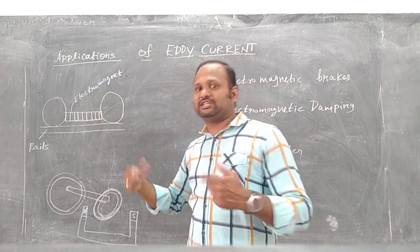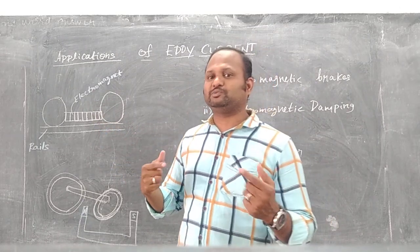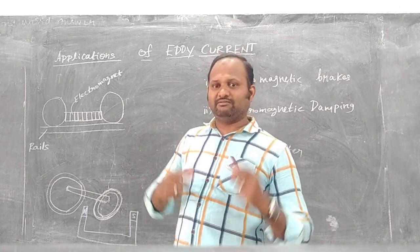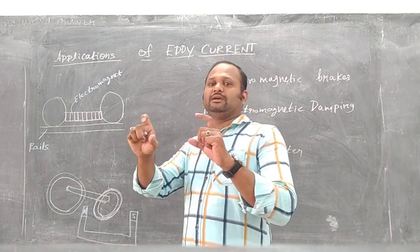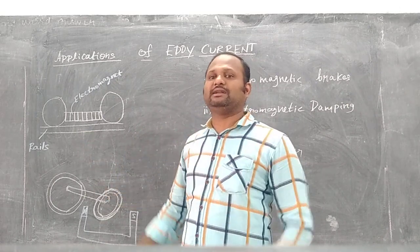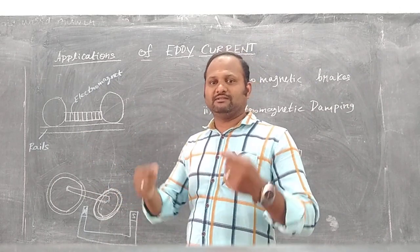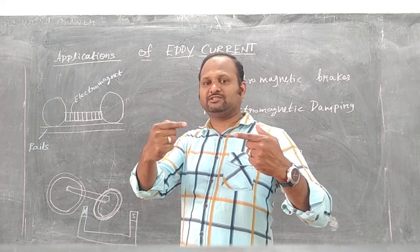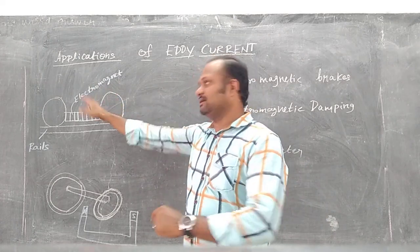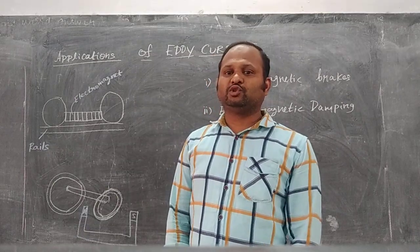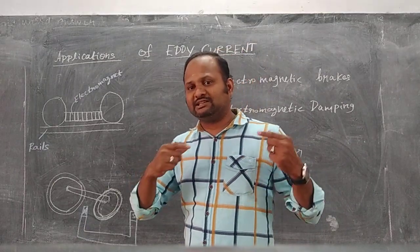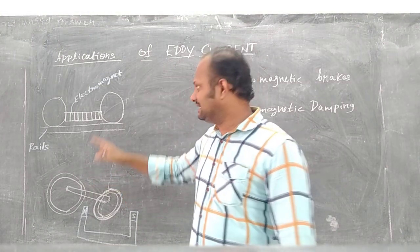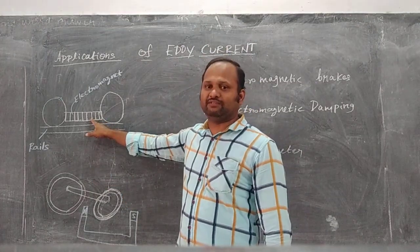When the wheels of the train rotate according to the speed of the vehicle, the wheels of the train move along with the strong electromagnet which is placed in the wheels. So when the wheel rotates, that means the train is moving, the strong electromagnet above the rails is also moving, so there is a change in the magnetic flux.